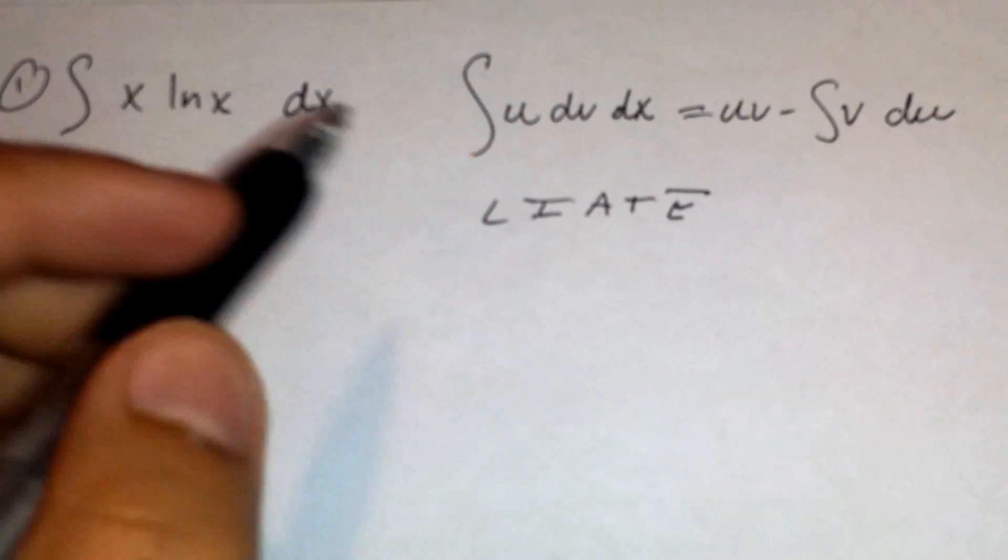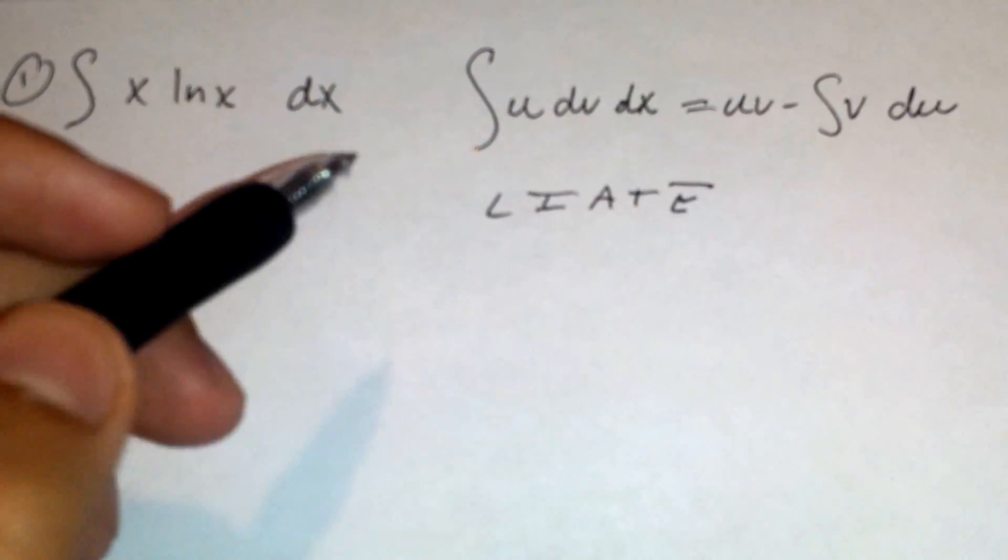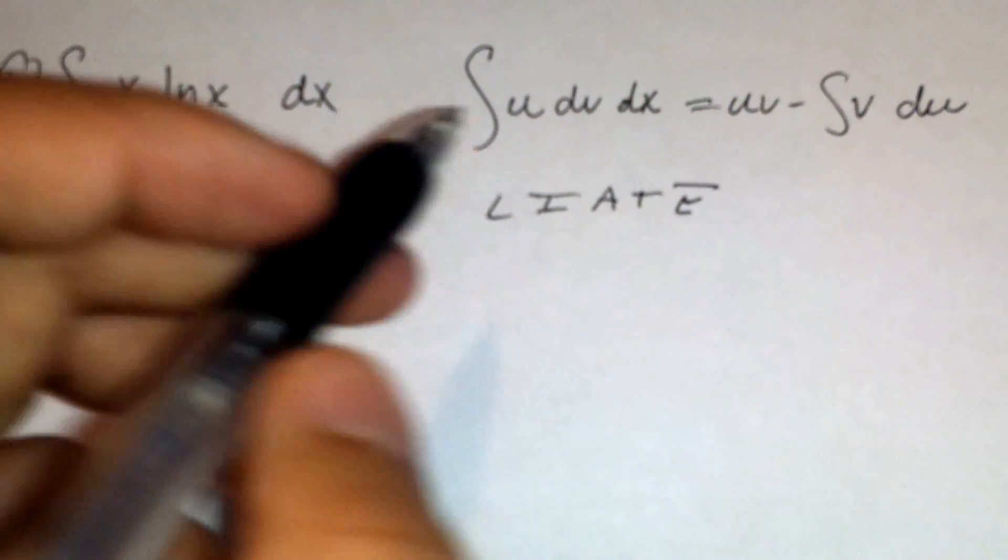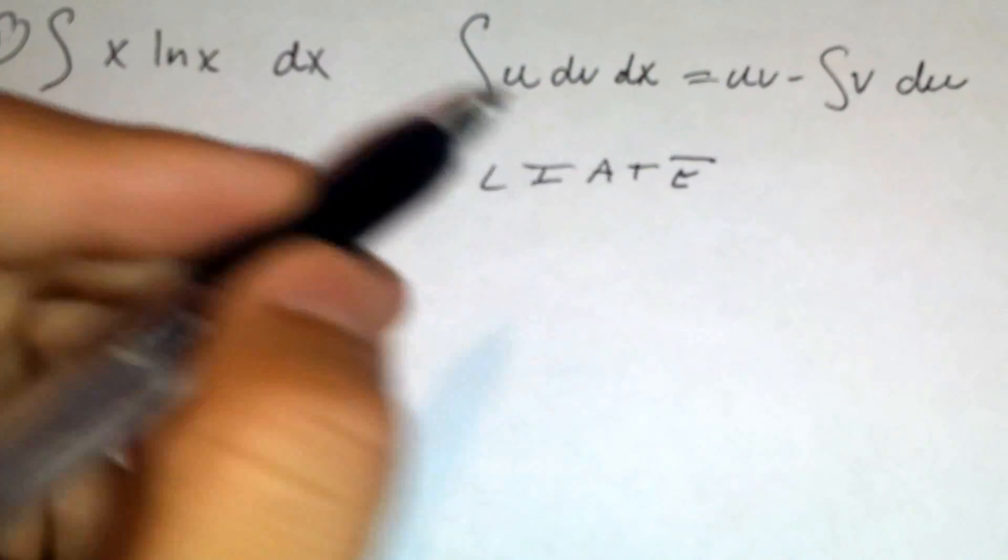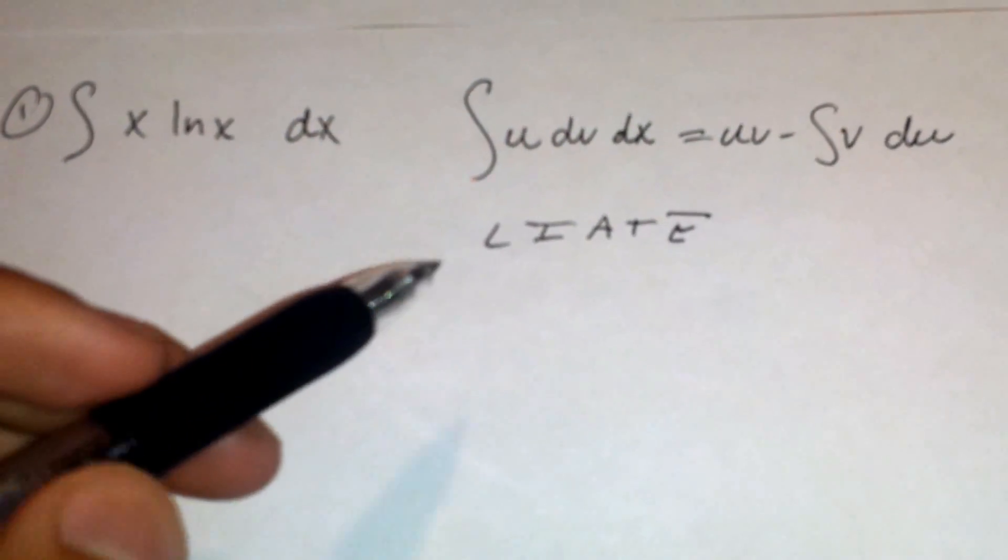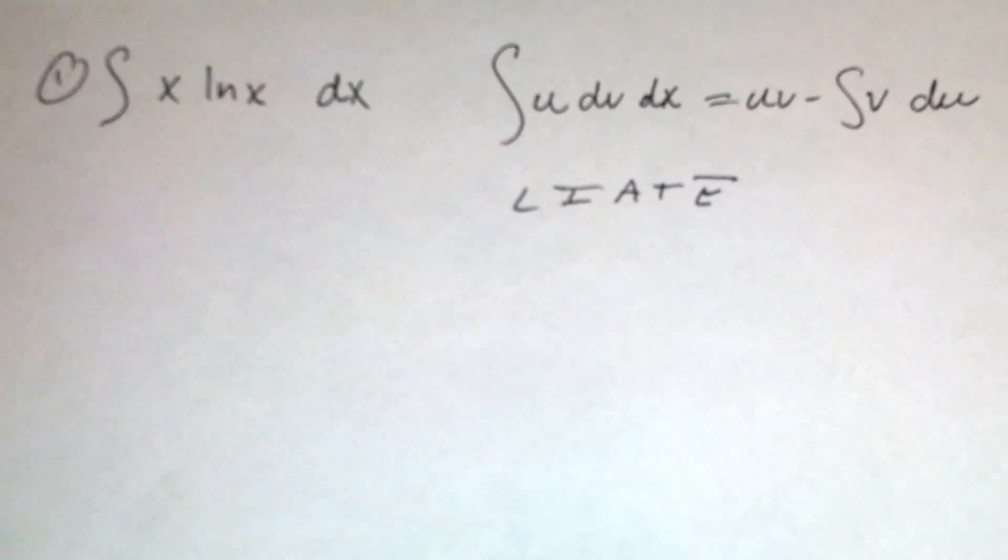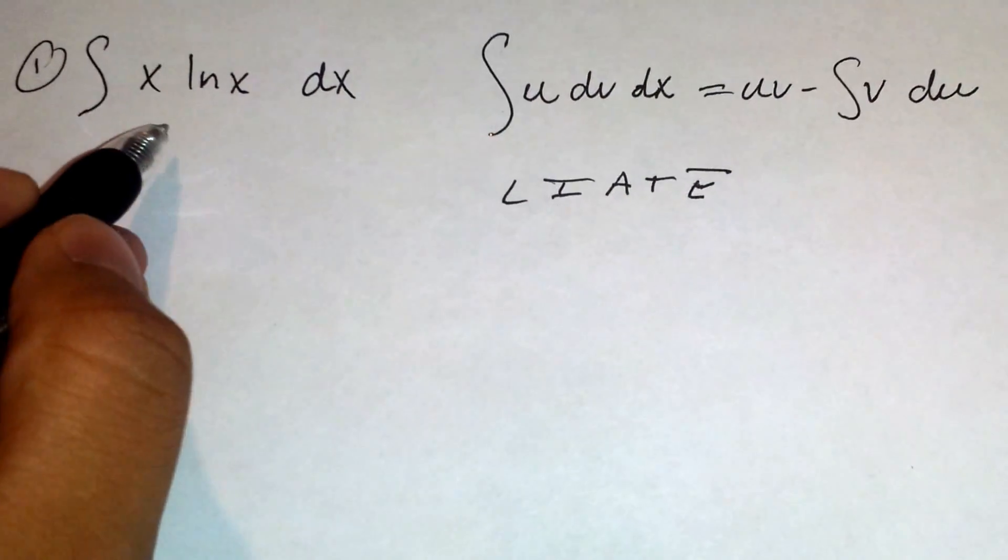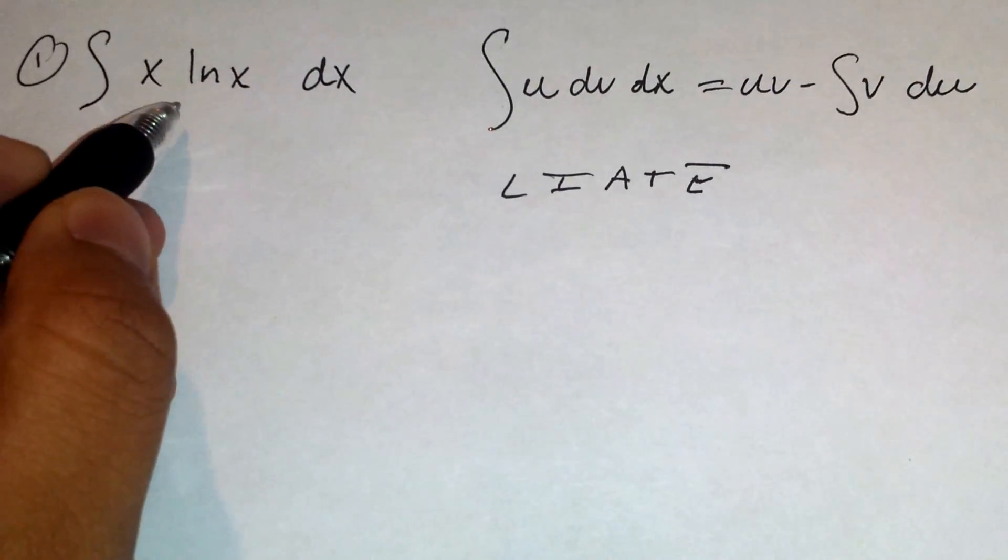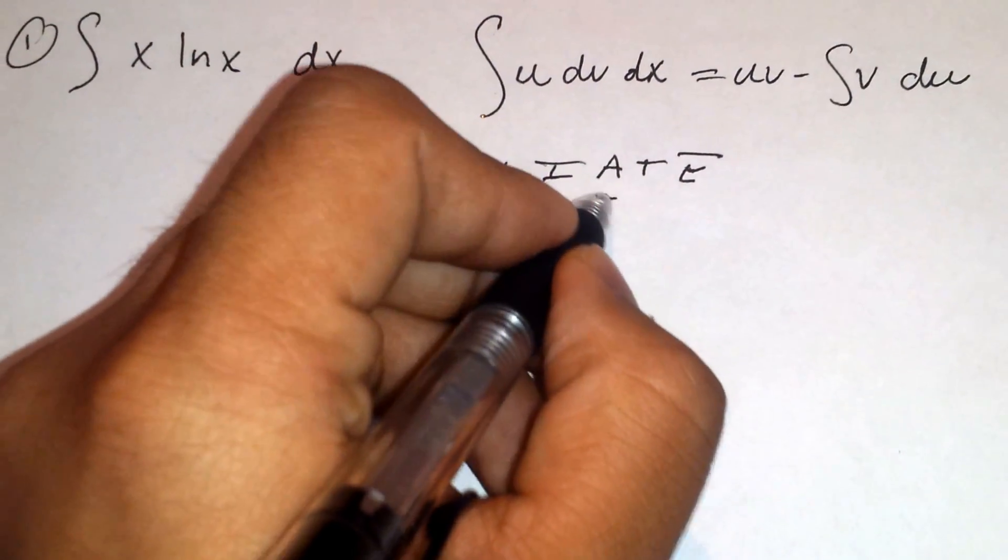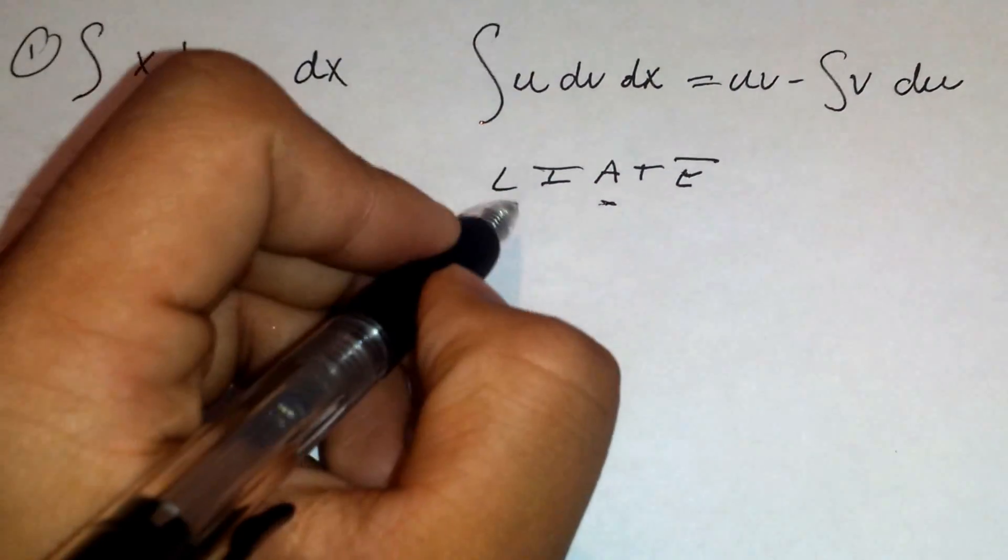To figure out which term is u and which term is dv, we'll use this acronym LIATE, which stands for logarithmic, inverse trig, algebraic, trig, and exponential. So x we have here is algebraic and ln is logarithmic.